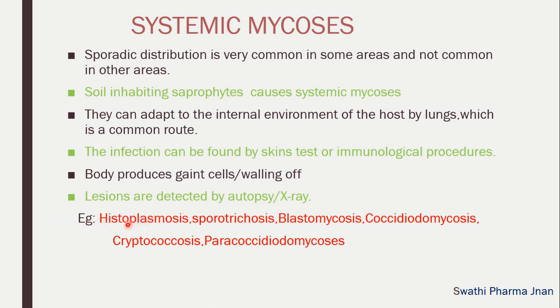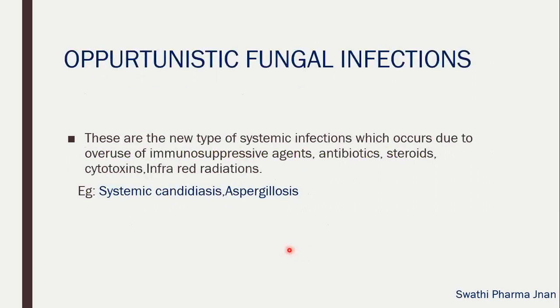Examples of systemic mycosis or systemic fungal infections are histoplasmosis, sporotrichosis, blastomycosis, coccidioidomycosis, cryptococcosis, and paracoccidioidomycosis.